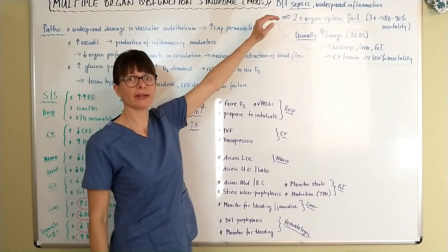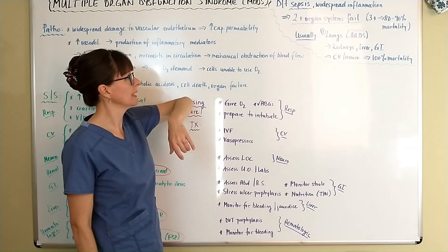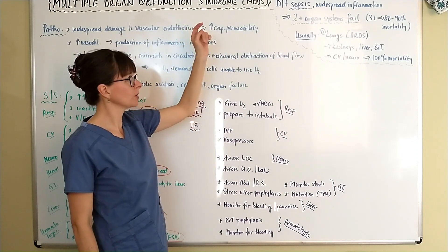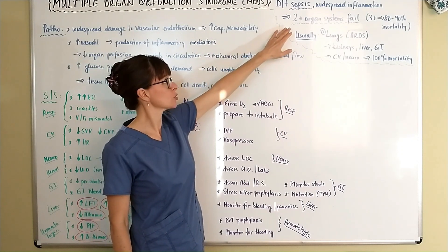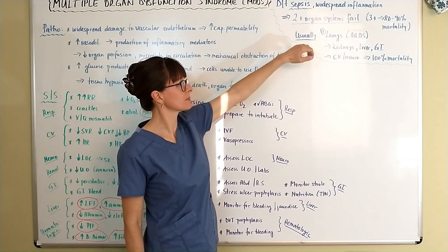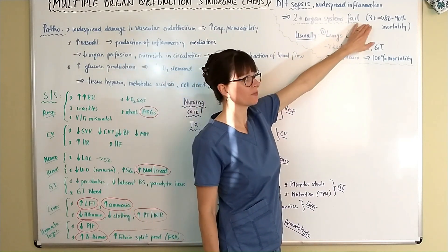we have this widespread inflammation in the body that leads to massive vasodilation and because we have multiple organs that fail, MADS is defined as 2 plus organ systems that fail but if 3 or more organ systems fail,